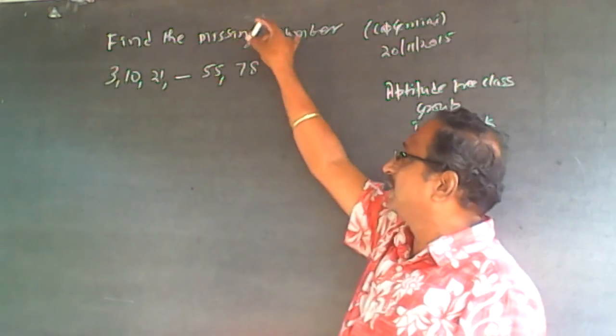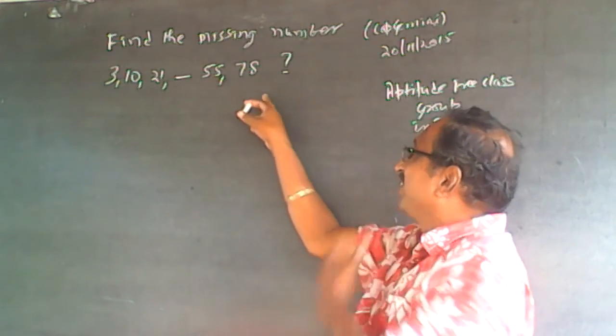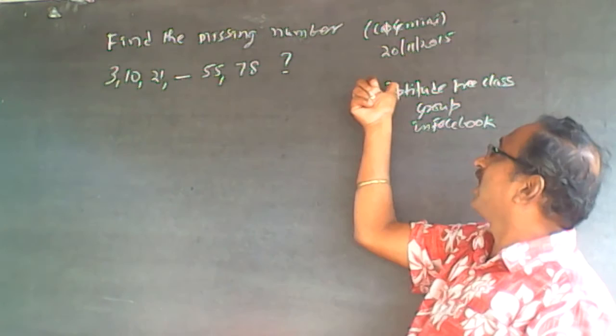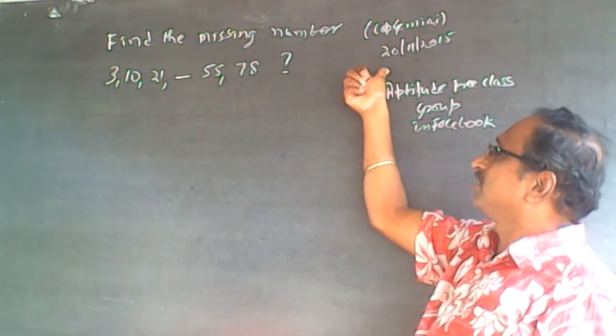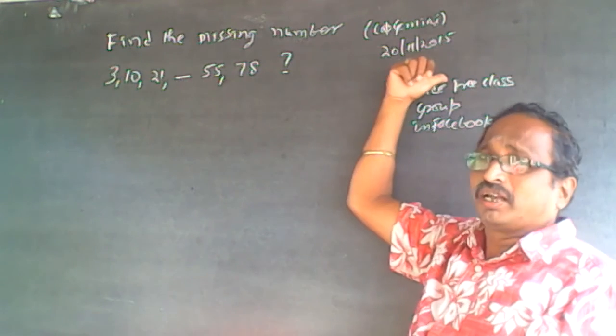The question is find the missing number: 3, 10, 21, ?, 55, 78. This question was asked in Capgemini recently, on 20th November 2010 in Chennai.